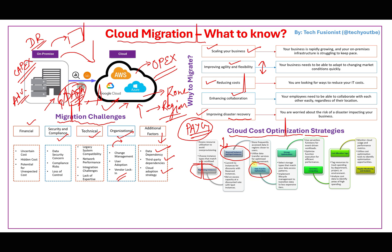You can also go with data transfer optimization — store frequently accessed data in a region closer to your end users and keep other data in lower-cost locations. For storage optimization, use the archive tier for backup data and implement data lifecycle management to transition data to less expensive tiers. Cloud providers offer hot, cold, and archive storage tiers.